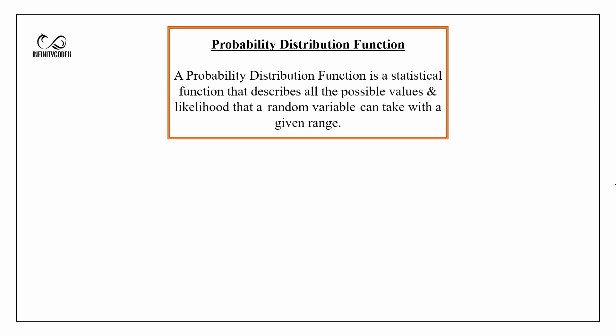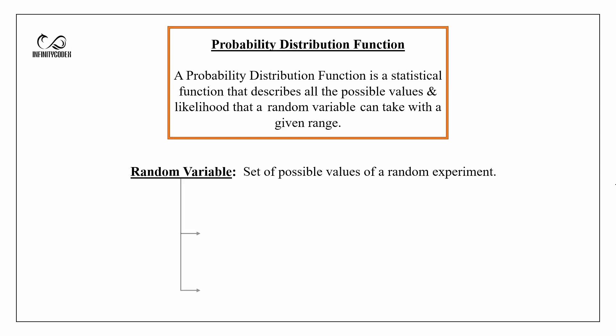All the topics we are going to discuss originate from a term called random variable. A random variable is a set of possible values of a random experiment. Random variable is divided into two parts: first, discrete random variable, and second, continuous random variable.